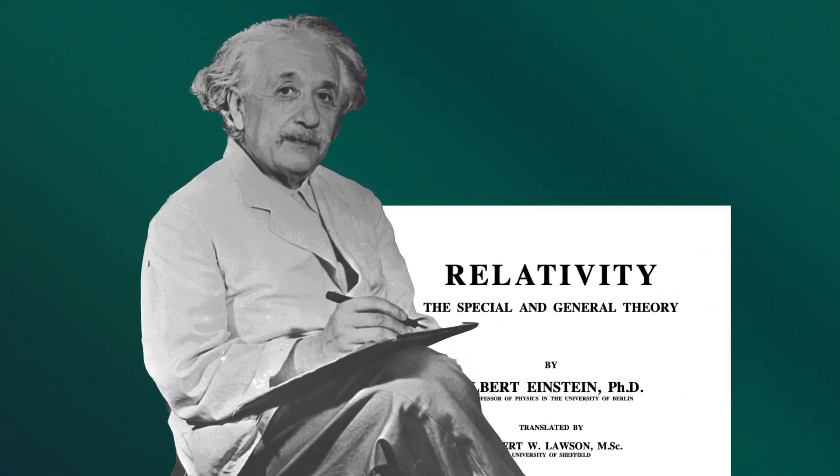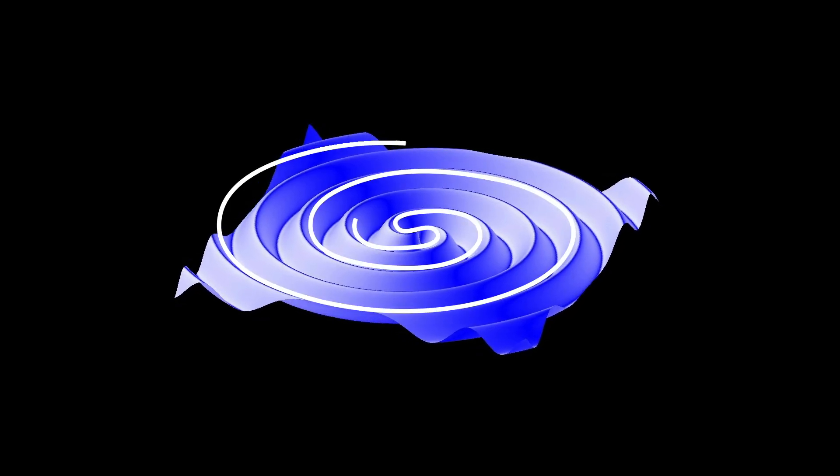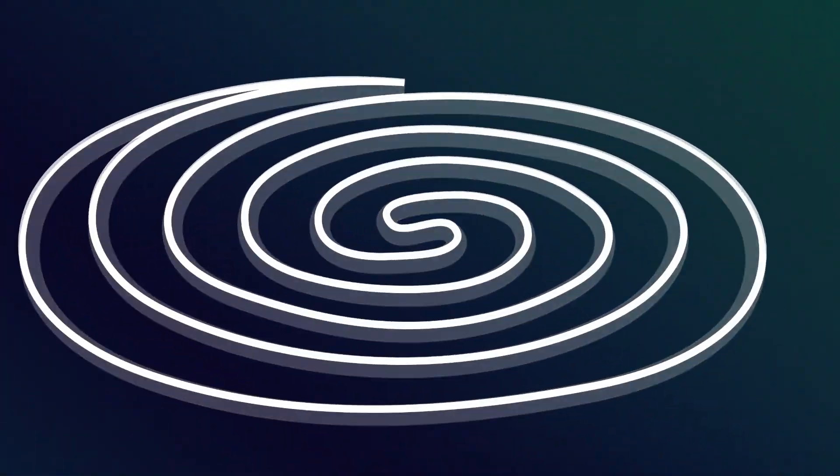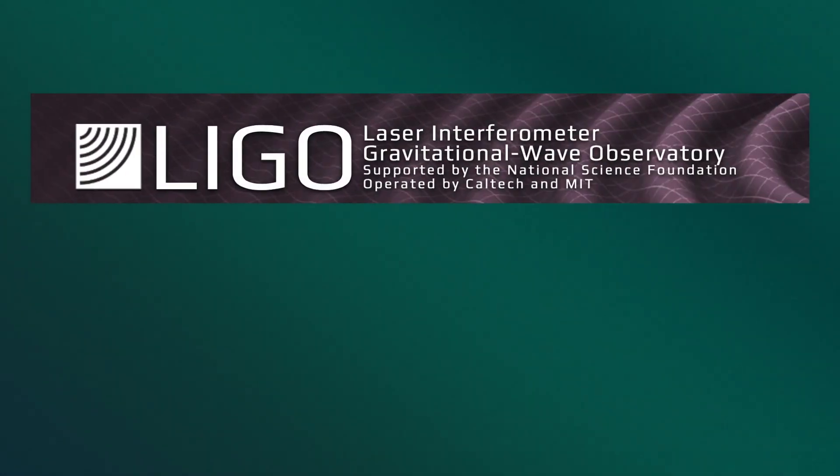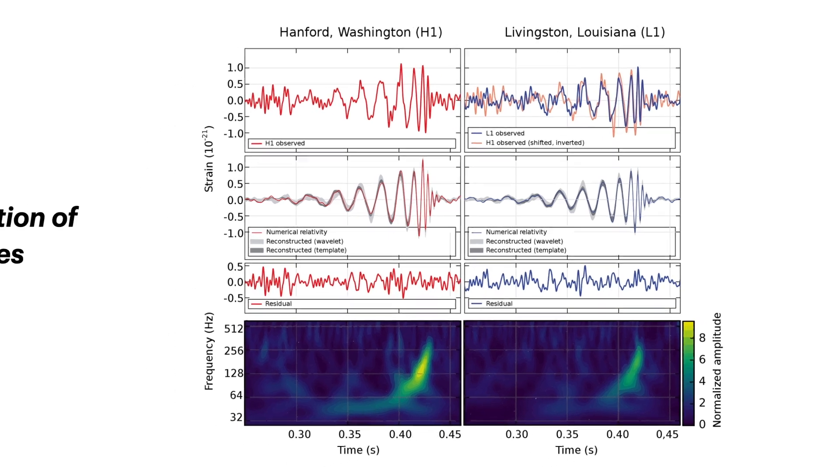For example, predicted by Albert Einstein's general theory of relativity in 1916 were gravitational waves. Gravitational waves are ripples in the space-time caused by some of the most violent and energetic processes in the universe. It wasn't until 2016, a hundred years later, that LIGO and Virgo collaborations announced the first observation of gravitational waves, confirming the prediction.